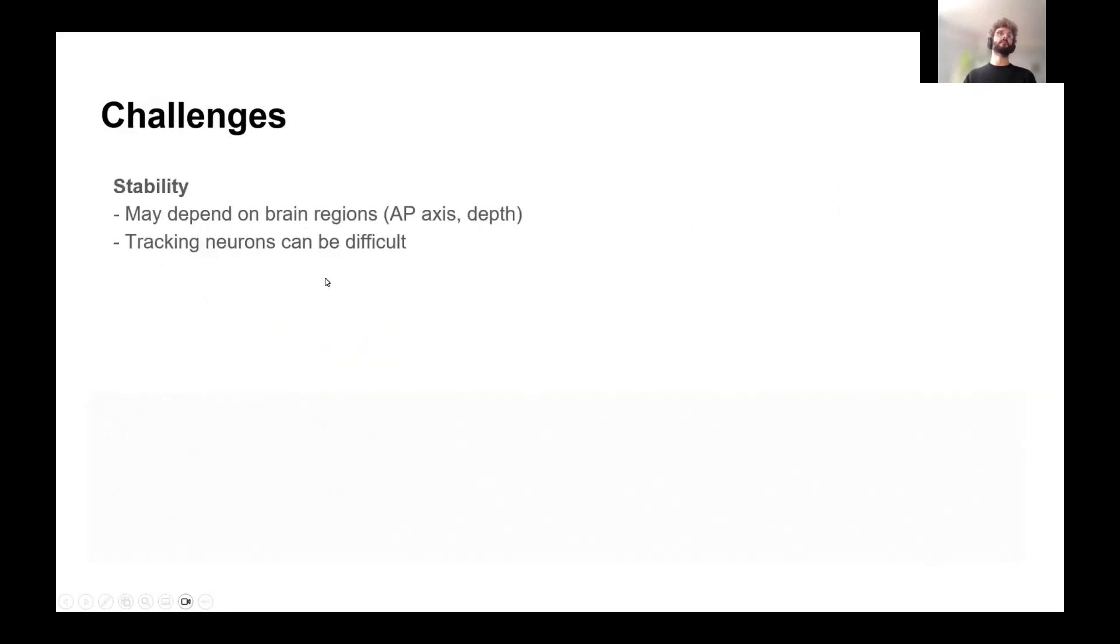And just to conclude on that, there are still some challenges that are left. And then I'm going to conclude. Some of it is stability. It's still very variable across mice, we still need to improve surgeries, and it may depend on brain regions. Tracking neurons can still be difficult. The weight and size, this is still hard and the Neuropixels probe is still pretty big. So it's hard to get below two grams, everything included. And the height of the Neuropixels probe can impede some movement.